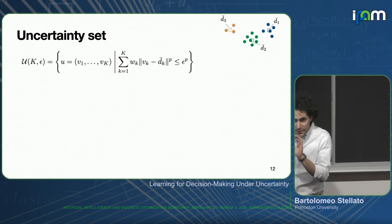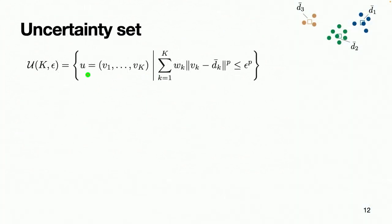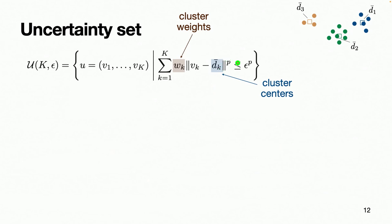Let me describe the uncertainty set more in detail. We are lifting the uncertain parameters into a higher-dimensional space, so u is now the concatenation of v1 to vK, where v represents perturbations related to every cluster from 1 to K. The uncertainty set is the sum from 1 to K of wk — the cluster weights, which weight more heavily clusters with more points — penalizing the distances between vk and d-bar-k (the cluster centers), raised to the power p. This is exactly the same p as in the Wasserstein data-driven robust optimization metric.